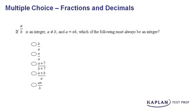Let's give it a shot with this problem right here. We want to know which of these answer choices must be an integer. We're given some specific information that we must abide. We know that a over b has to be an integer, a cannot be equal to b, and a equals n times b.